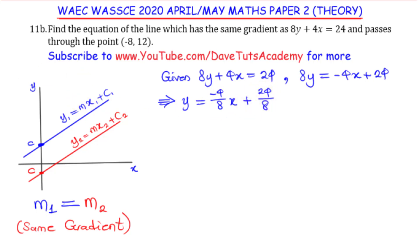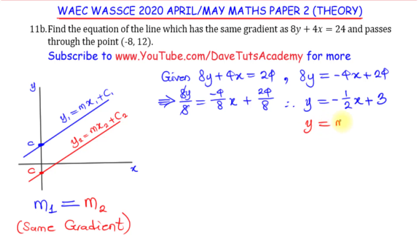Dividing each term by 8, the 8s cancel on the left-hand side, and we get y equals minus 4 over 8 x plus 24 over 8, which simplifies to y equals minus 1 over 2 x plus 3. This is the alternate representation of 8y plus 4x equals 24. Comparing with y equals mx plus c, we can see that m equals minus 1 over 2.